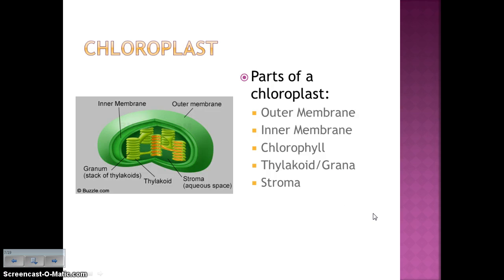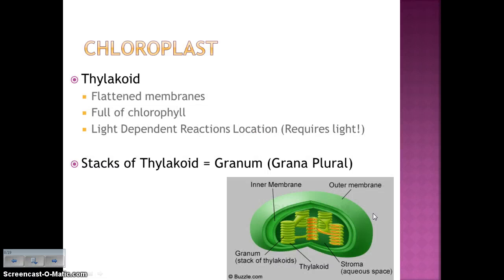Here's the structure of a chloroplast — you'll need to pause and draw this under number 10 on your notes organizer. The parts of the chloroplast include the outer membrane, the inner membrane, chlorophyll (which is the pigment found inside the thylakoid), and the stroma. The thylakoids are flattened disc-like membranes full of the pigment chlorophyll — this is what gives the chloroplast its green color, and this is where the light-dependent reactions take place. Stacks of thylakoids are called a granum; multiple stacks are called grana.